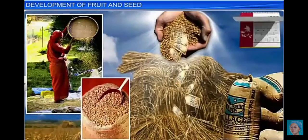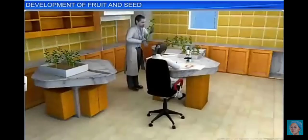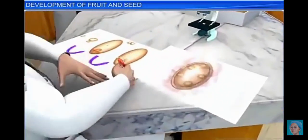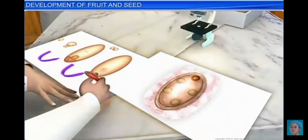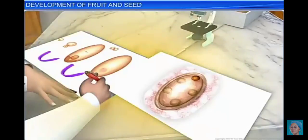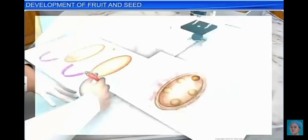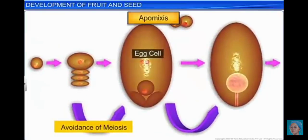To address this problem, botanists are trying to understand the genetics of apomixis and transfer apomyctic genes into hybrid plants. Apomixis is a form of asexual reproduction in which the seeds or embryos are formed without fertilization.